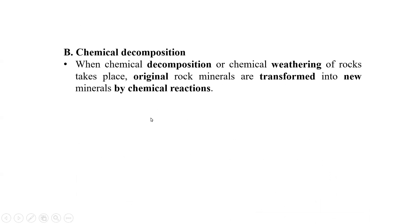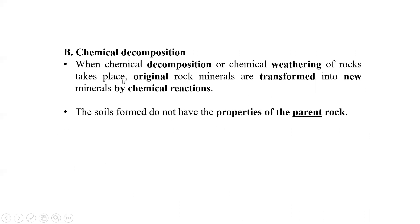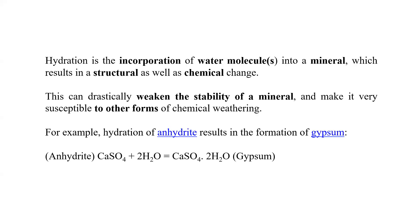Now we shall come to the next point: chemical decomposition. When chemical decomposition or chemical weathering of rocks takes place, original rock minerals are transformed into new minerals by chemical reactions. Here the properties of the parent rocks are going to change because chemical reactions take place.